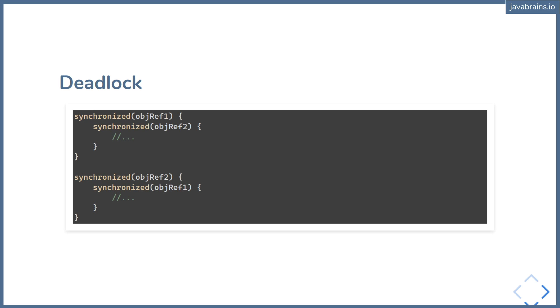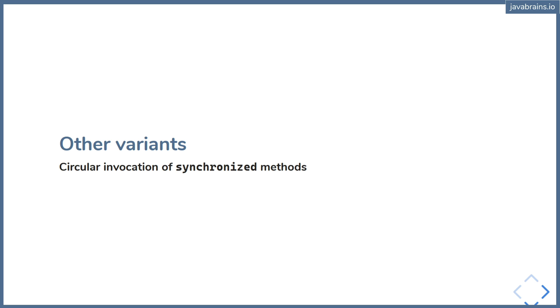This is what's referred to as a deadlock — the application is essentially locked, and since it's not making any progress, it's essentially dead. There are other variants too, like circular invocation of synchronized methods: A calls B, B calls C, and C calls A, all synchronized on different objects. Another variant is two threads invoking join on each other — thread one does thread two dot join, and thread two does thread one dot join — resulting in threads potentially waiting forever, because each is waiting for the other to complete.